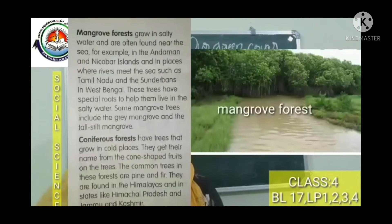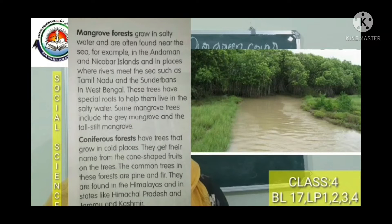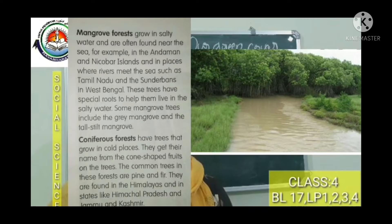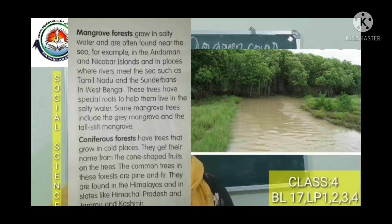Mangrove forests grow in salty water and are often found near the sea — for example, in Andaman and Nicobar Islands and in places where rivers meet the sea, such as Tamil Nadu and Sundarbans in West Bengal. These trees have special roots to help them live in salty water. Some mangrove trees include the gray mangrove and the tall stilt mangrove.